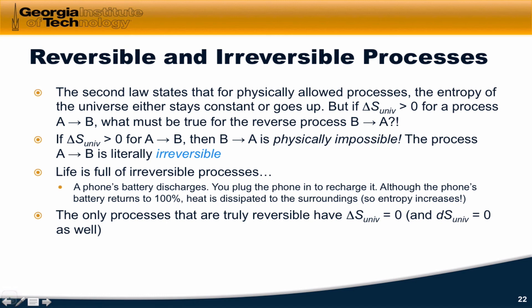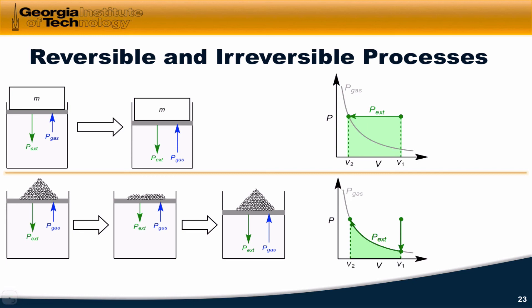All of those movements, according to Newton's laws, amount to delta S equals zero and dS equals zero. Just to look one more time at the reversible and irreversible processes we've seen already.